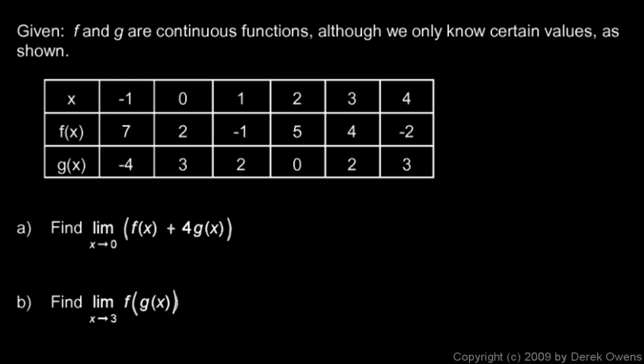Okay, here's another problem where we're given a table of values and we're asked some limit questions, although this one's a little bit different than the previous ones. In this one, we're given two functions named f and g, and we're told that they're both continuous functions, and we only know certain values. Even though we only know values for the functions at certain points, the functions are still continuous functions.